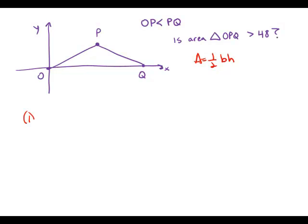Statement number one tells us that the coordinate of P is (6,8). And so what we have here, 6,8, means that we've gone over 6 and then up 8.